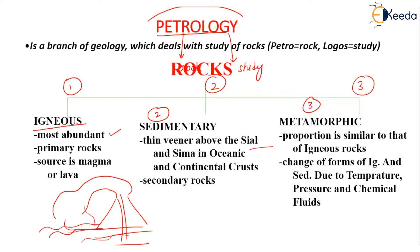Sedimentary rocks are also known as secondary rocks. Coming to the third variety, that is metamorphic rocks, these are very much similar in proportion to the igneous or sedimentary rocks. There is a change of form of the igneous or sedimentary rocks, and this change is mainly due to changes in temperature, changes in pressure, and the chemical fluids which are acting on the different parent rocks.